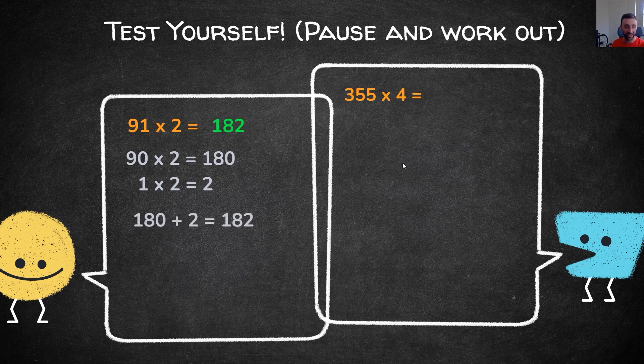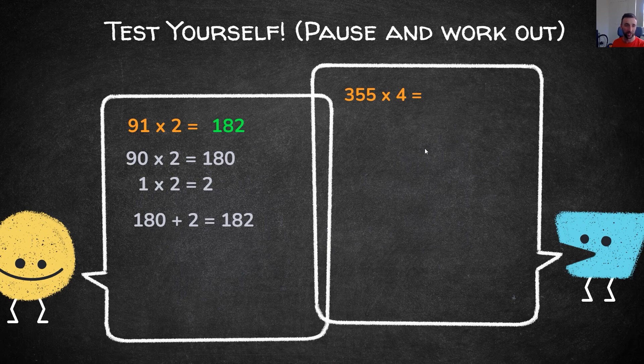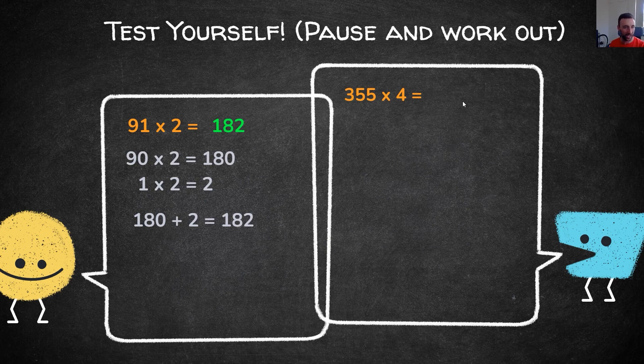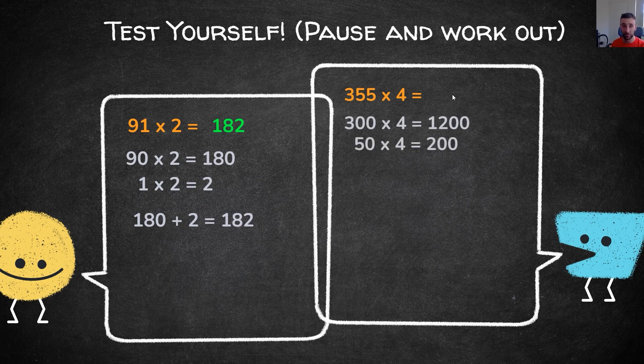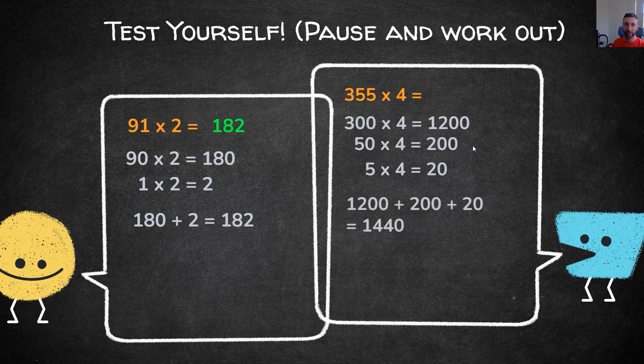The second example, 355 times 4. We partition hundreds, tens and ones. 300 multiplied by 4 is 1200, 50 multiplied by 4 is 200, and 5 by 4 is 20. Add them up, giving us our final answer of 1440.